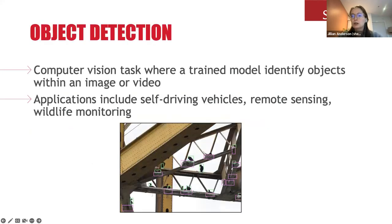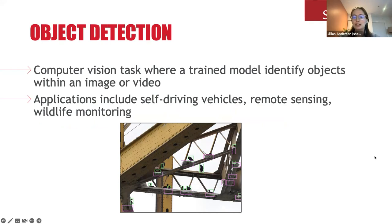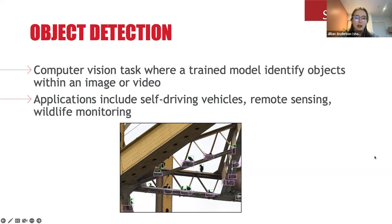For those who don't know, object detection is a computer vision task where a model is trained to detect multiple objects within an image or video. This really differs from classification tasks, where classification is about taking an image and classifying that entire image. Object detection is about picking out individual objects, and often those objects are of different classes.